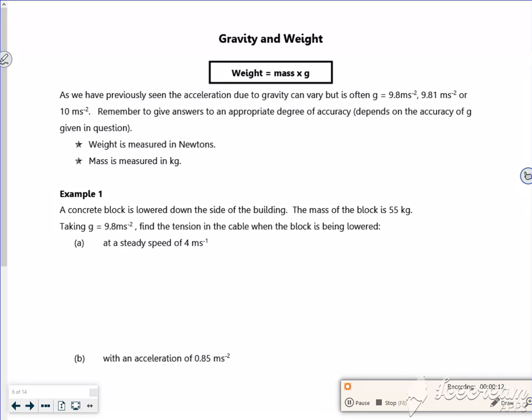Weight is mass times gravity. The acceleration due to gravity can be 9.8 (2 sig figs), 9.81 (3 sig figs), or 10 (1 sig fig). You should give all your answers to an appropriate degree of accuracy depending on which g value is given. Weight is measured in newtons, mass is measured in kilograms.